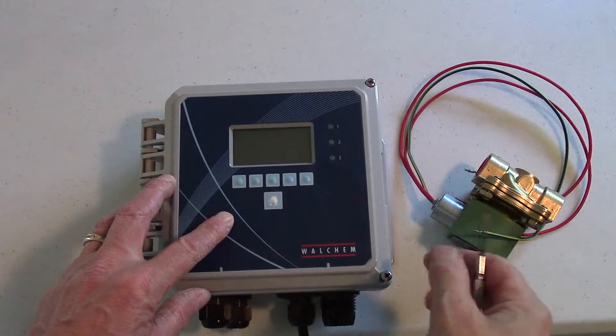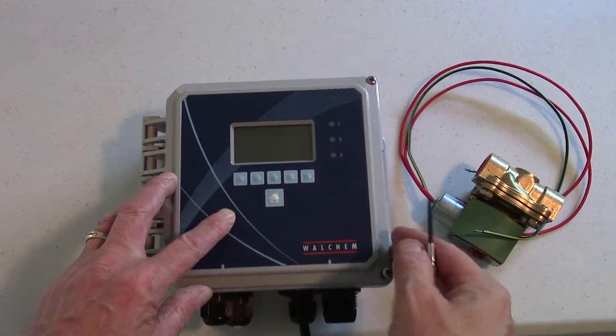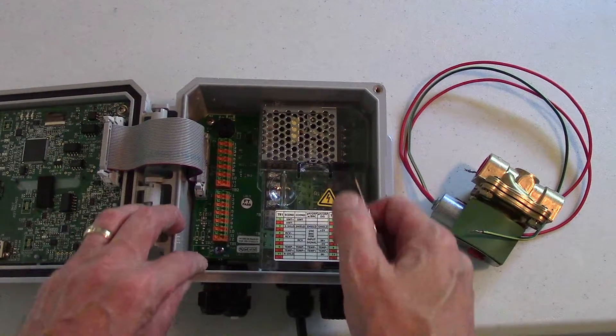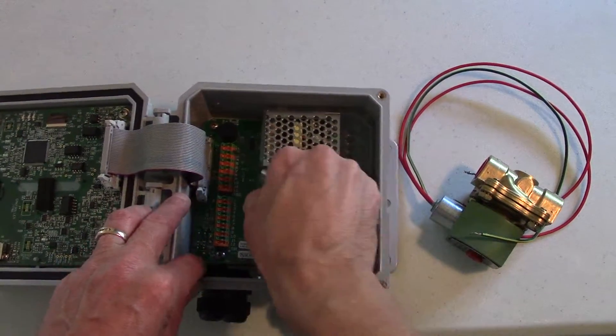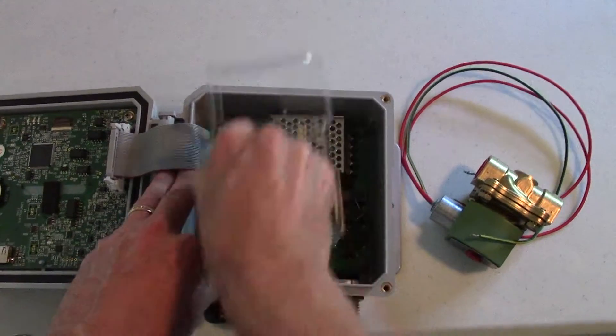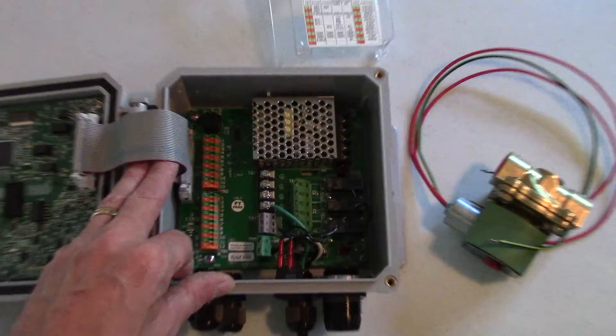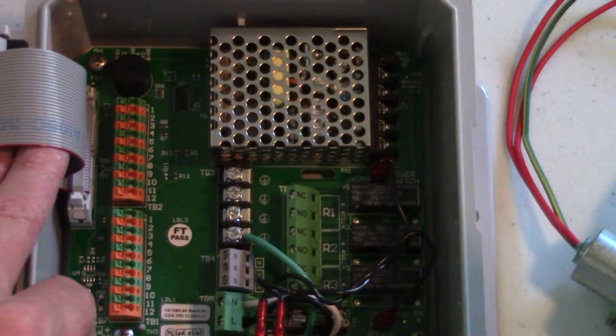Before doing any wiring on the controller remember to cut power to it. The W100 does have a protective cover over the relays and the terminals. It pulls right off and inside you'll see the terminals clearly marked.